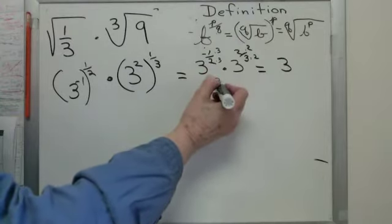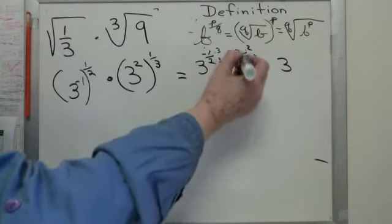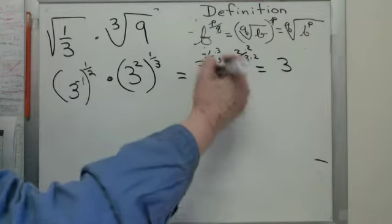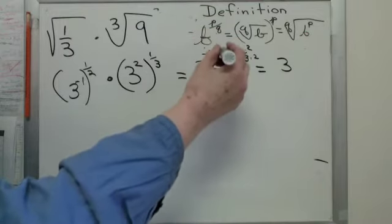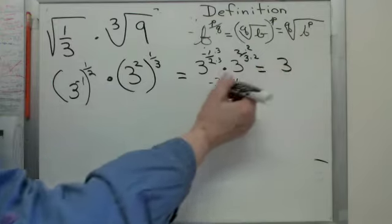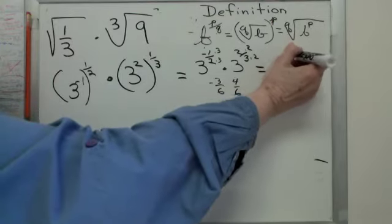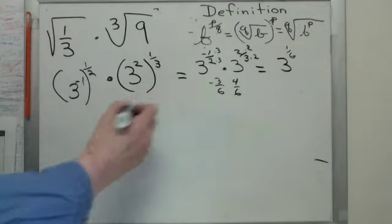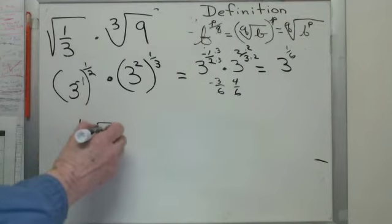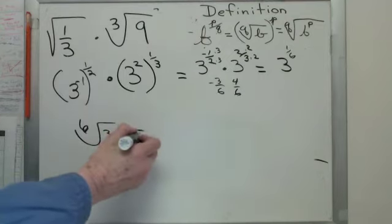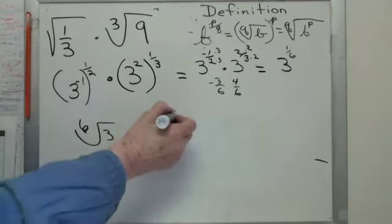So that would be 3 over 6 and that would be 4 over 6. And what do I do with the exponents? Add them. So I get 3 to the 1/6th. So the answer to this problem is the 6th root of 3 or 3 to the 1/6th.